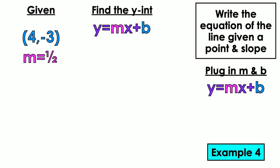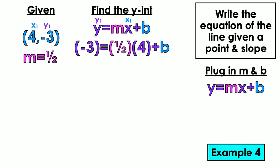Example number 4. I have 4 comma negative 3. That's my point. So that's X1 and Y1. M equals 1 half. So plug in X1 and Y1. So negative 3 equals 1 half for M. 4 for X1 plus B.